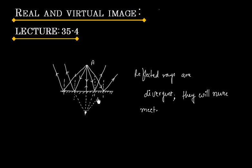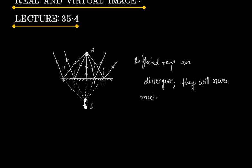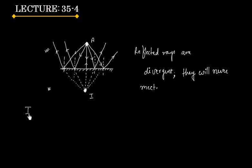It seems the reflected rays are coming from the same point, and this point is basically the image. They appear to come from the same point, and this point is the image of object A. This image is behind the plane mirror — on one side we have the object, and on the other side we have the image.